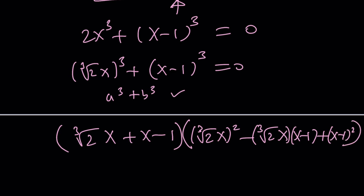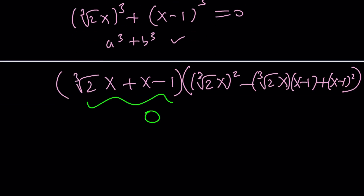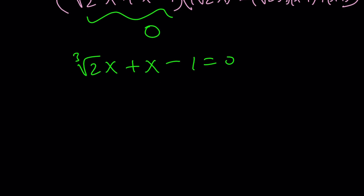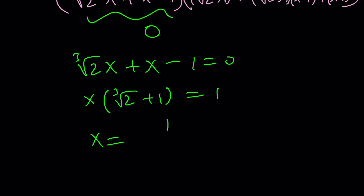That's like the cube root of 2x multiplied by x minus 1, plus x minus 1 quantity squared, which gives us the quadratic. Setting the whole thing equal to zero means this first factor equals zero. From there, you should be able to get the exact same solution.